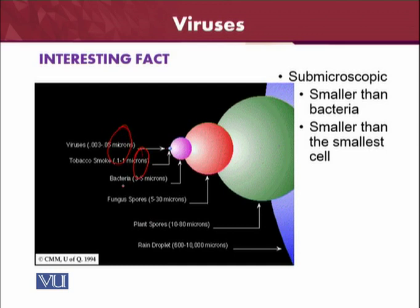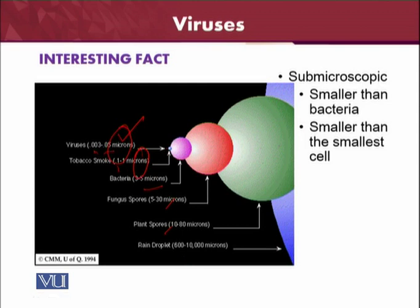These are the historical viruses which were discovered for the first time. Some viruses are 0.003 to 0.05 microns — the very smallest ones. Then the tobacco mosaic virus, which is a virus of plants discovered some years ago, is 1.1 to 1 micron. Then there are bacteria, fungus, plant spores, and rain droplets, which we can use to compare the different sizes of viruses.